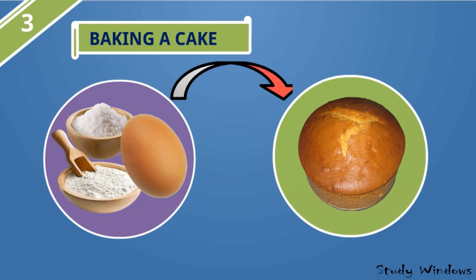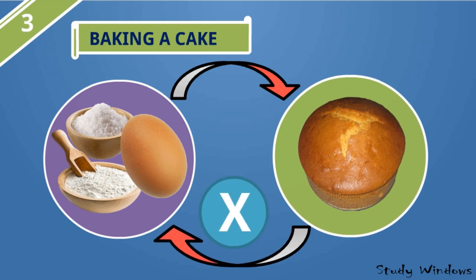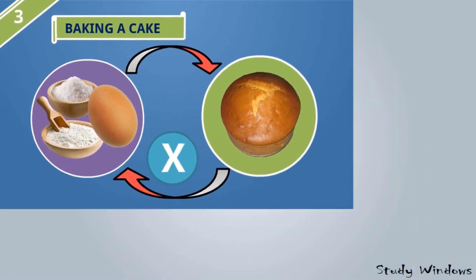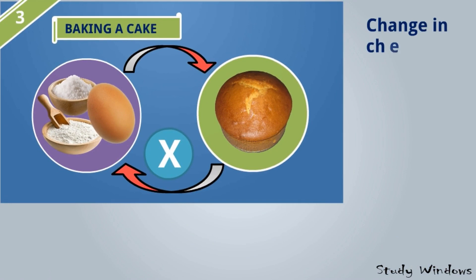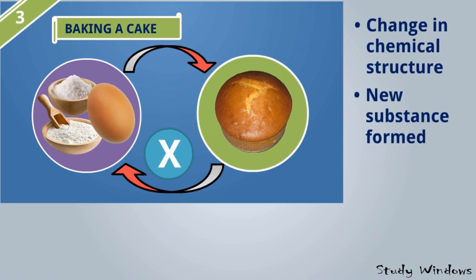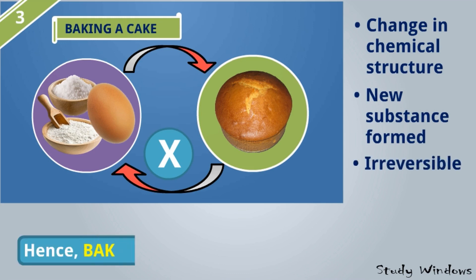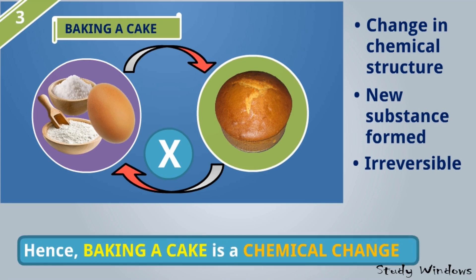These components change into a cake, but we cannot get the raw ingredients back from the cake. Hence we can say change in chemical structure has happened and a new substance is formed. It is irreversible, hence baking a cake is a chemical change.